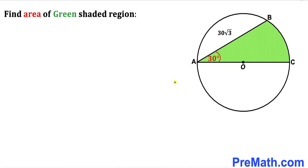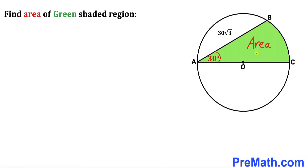Welcome to PreMath. In this video we have this green shaded region confined between chord AB and diameter AC of a given circle, such that angle BAC is 30 degrees and chord AB is 30 times square root of 3 units long. Our task is to calculate the area of this green shaded region.